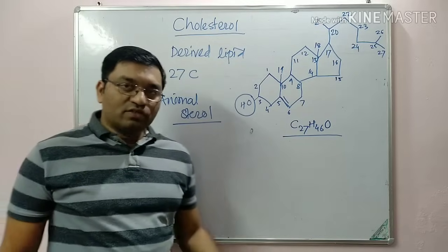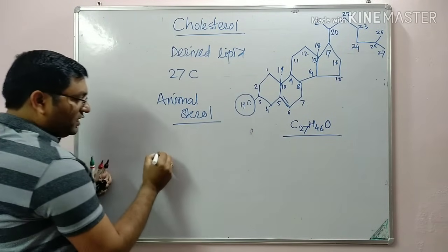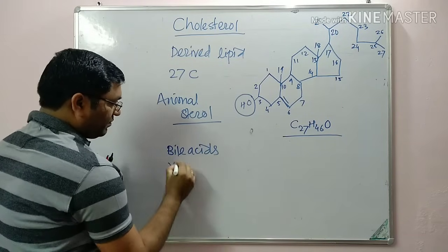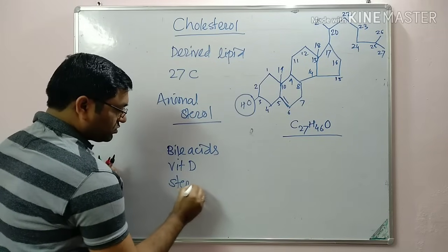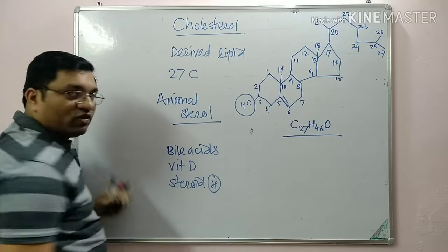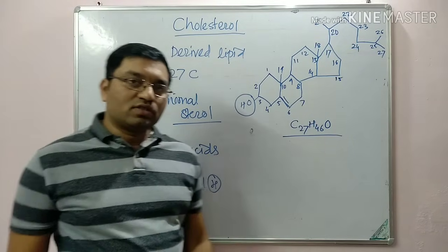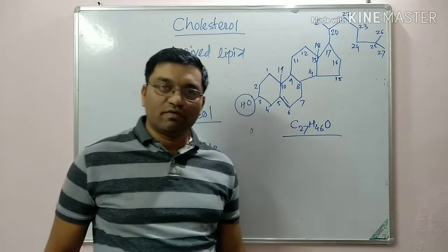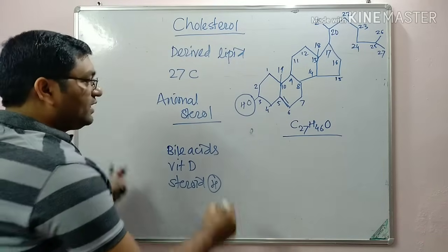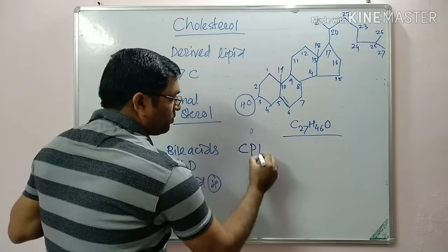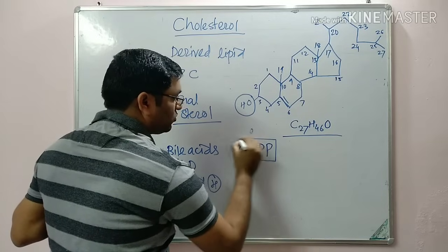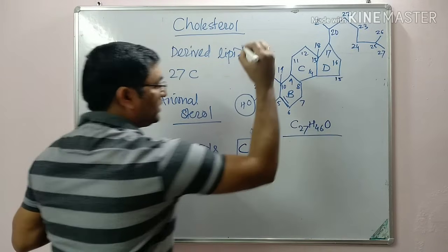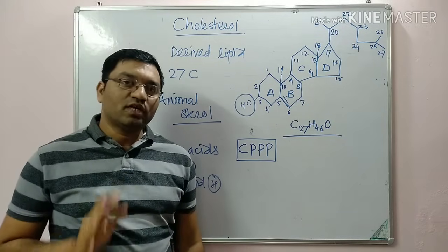Cholesterol has a number of functions in our body. The important ones are: it is a precursor for bile acids, vitamin D, and steroid hormones. It is required for transport across the plasma membrane and is a component of the plasma membrane. It contains the cyclopentano perhydro phenanthrene ring or nucleus — three cyclohexane rings A, B, C and one cyclopentane ring.